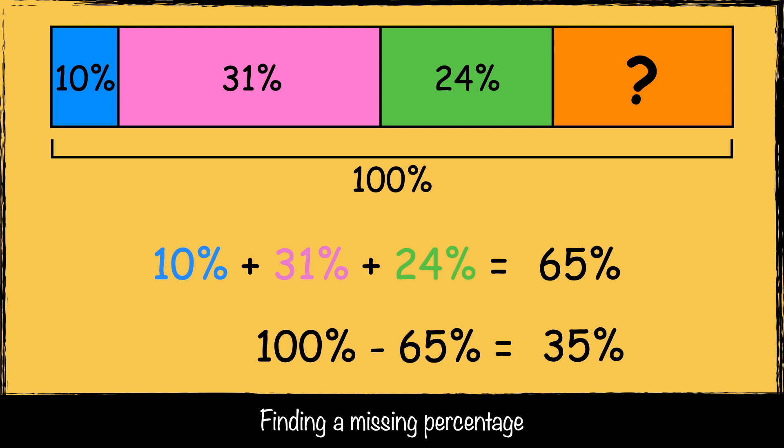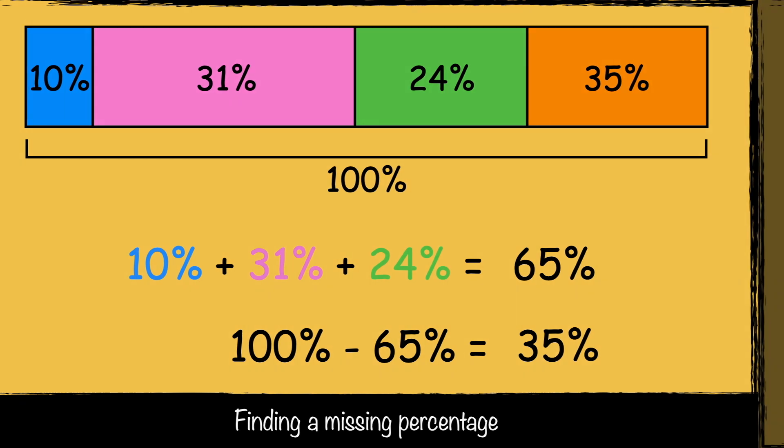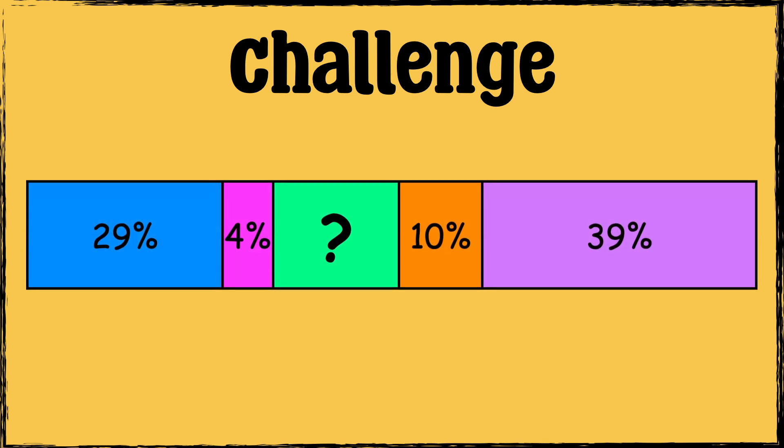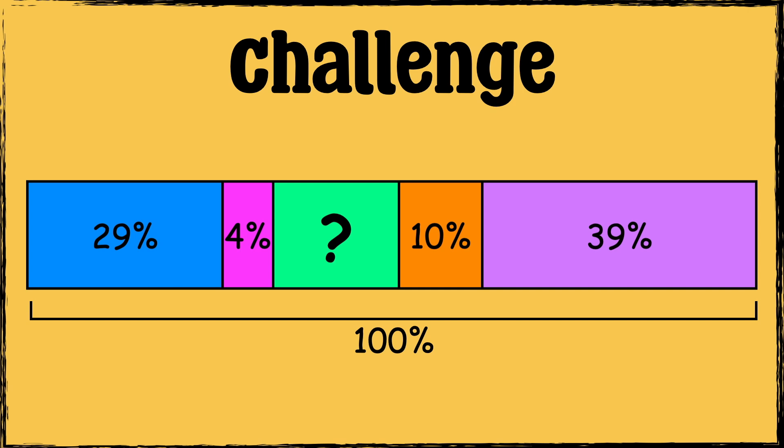So now we can subtract 65 from 100% to find our missing percentage. A hundred take away 65 is 35, so the missing percentage in this challenge is 35%. Now it's your turn — here's a shape split into five parts. Can you work out the missing percentage? Remember, all the parts should add to make 100%. Let me know your answer in the comment section.